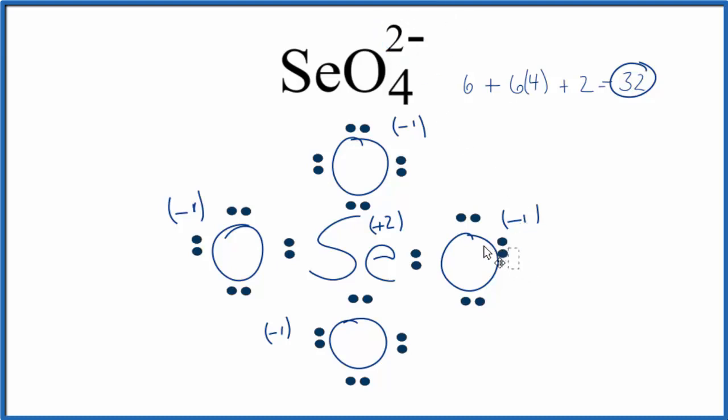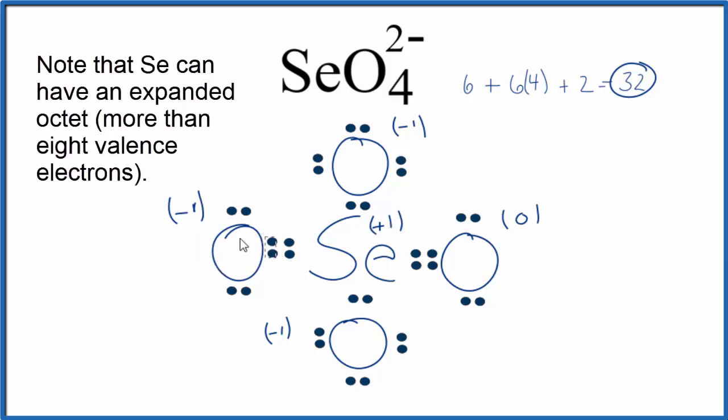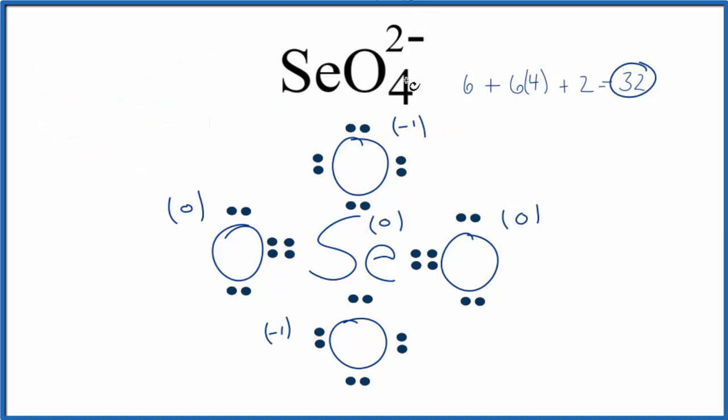The way we do that, we could move this pair of electrons here, and then the formal charge for this oxygen here would be 0, and now this would be plus 1. So we can move these here, and then we'd have a 0 on this oxygen here, and the selenium, that would be 0. And if we added up the formal charges, we get the 2-.